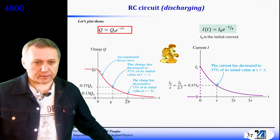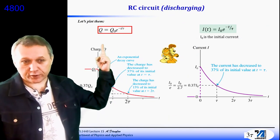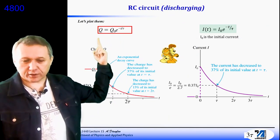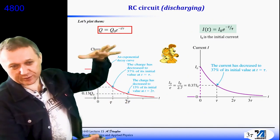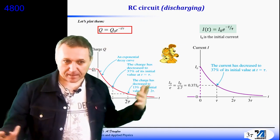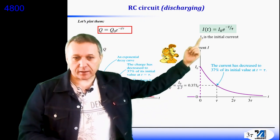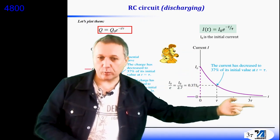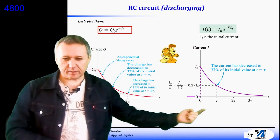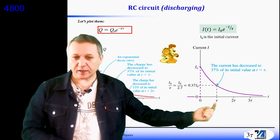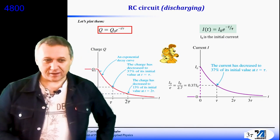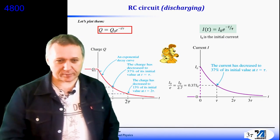For the discharging case, charge decays exponentially — the capacitor is fully charged at first and then loses its charge. Current still behaves the same way as in the charging case. At the moment tau, the current is at 37% of its maximum value.